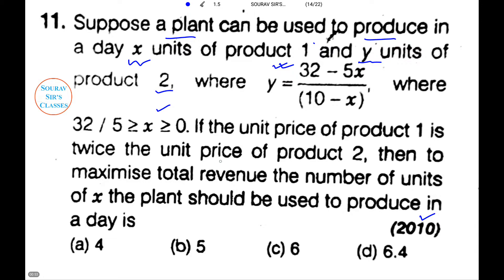The unit price of product 1 is twice that of product 2 — that is the relation with regard to the price of the two products. What we need to do is maximize total revenue. They want to know the number of units of X the plant should produce in a day to maximize revenue.